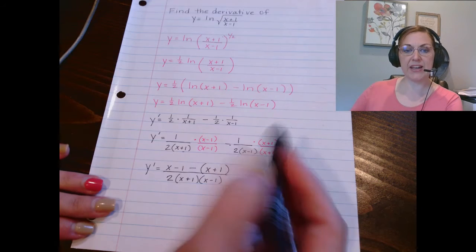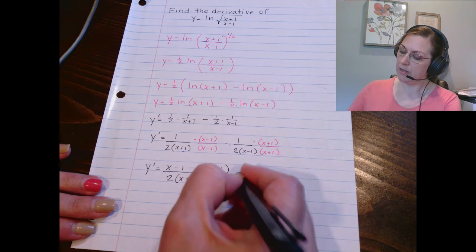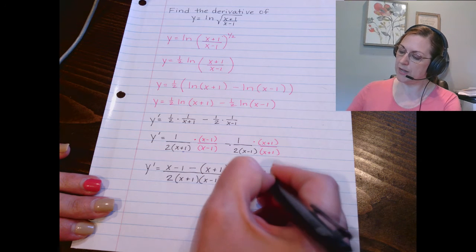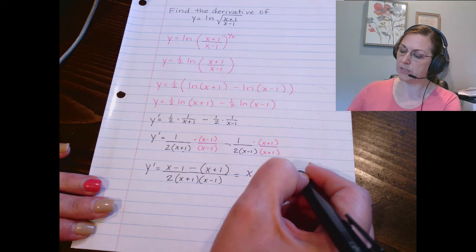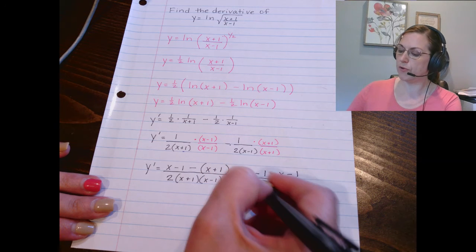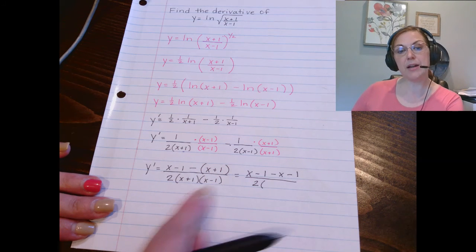So let's simplify even further. We'll distribute the minus here. That gives me x minus 1 minus x minus 1 over 2 times. I'm going to go ahead and multiply these two parentheses together.